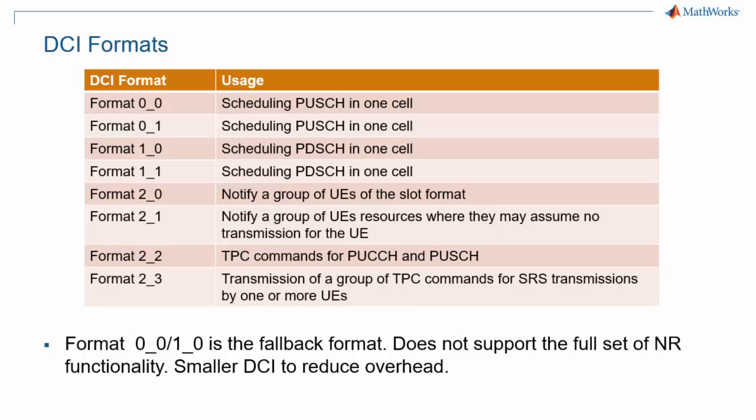For both uplink and downlink information, there are two possible formats, one with underscore 0 and one with underscore 1. The format with underscore 0 is called the fallback format. It is more compact than the full format with underscore 1 because it doesn't include all options, and therefore trades off less scheduling flexibility for reduced control overhead.